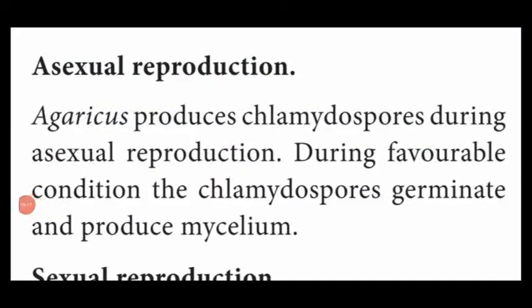Next we are going to see reproduction in Agaricus. Reproduction is divided into two types: asexual and sexual reproduction. Agaricus also shows two modes of reproduction. First, asexual reproduction: Agaricus produces chlamydospores which act as an asexual mode of reproduction.